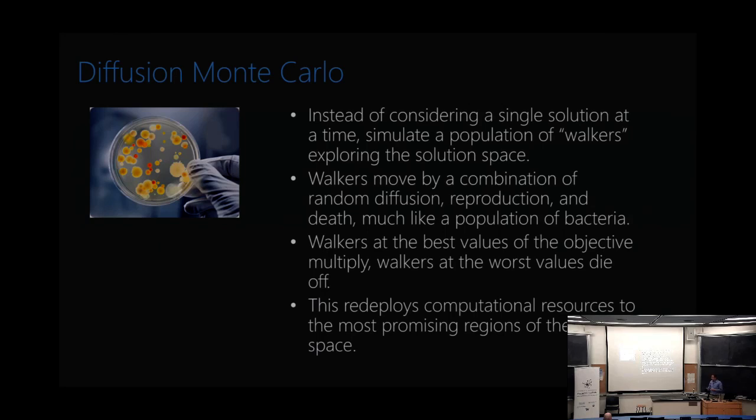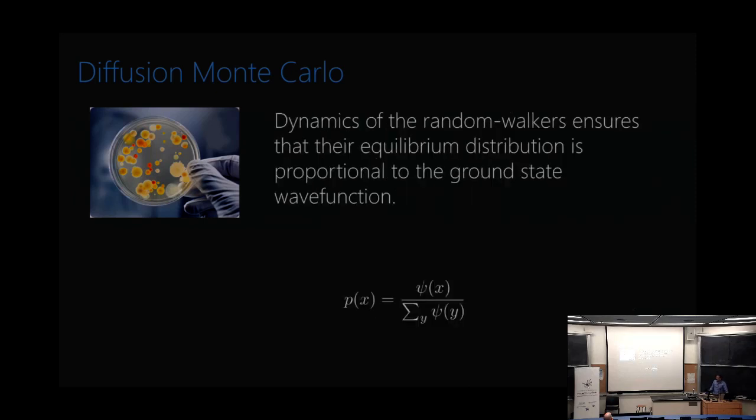And the intuition for why this is good for optimization is somewhat similar to the intuition behind path integral Monte Carlo which is that you have these walkers they're exploring the search space. Each time you evaluate the cost function that's some computational work that you have to do and so you want to spend more of your effort exploring the regions that are more promising that have lower energies. On the other hand you don't want to just totally concentrate your effort there because then you might miss out on something that is a little bit more hidden. So you have this dynamic of walkers where if some walker stumbles onto a promising region of the space it will start to thrive and more of the population is redeployed to search that part of the space. And one thing you'll notice is that there's not going to be any topological barriers here. These are separate walkers they're not tied together in some chain. You're not going to have the same problems that Matt Hastings pointed out with path integral Monte Carlo.